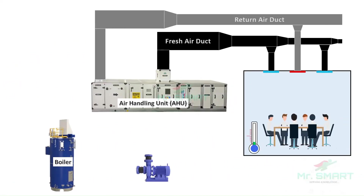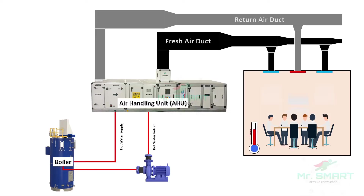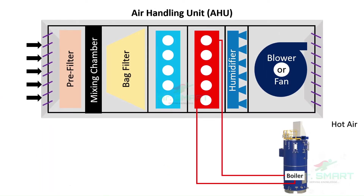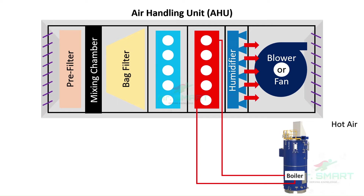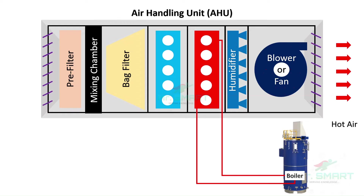Similarly, when the space is too cold, hot water is pumped through the heating coils from the boiler, increasing the temperature of the space by supplying hot air. The increase in temperature continues until the hot water supply is turned off or the space temperature and hot water temperature become equal. The hot air is produced in the AHU as a result of convective heat transfer between hot water in the heating coil and atmospheric air sucked in for circulation.